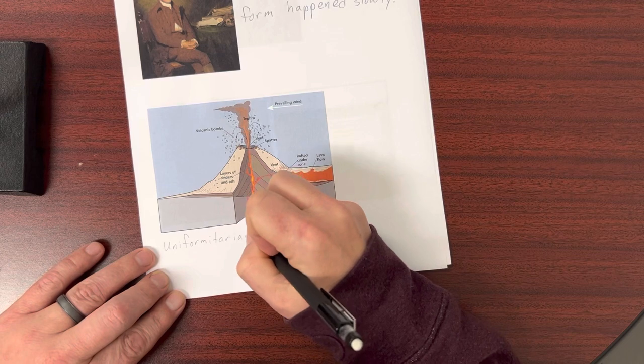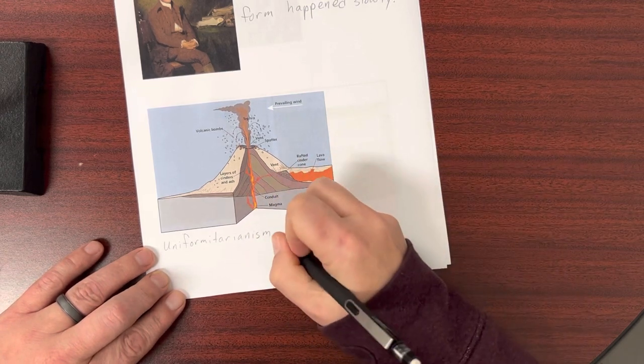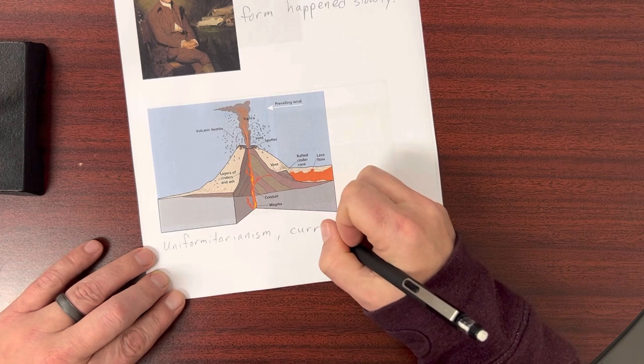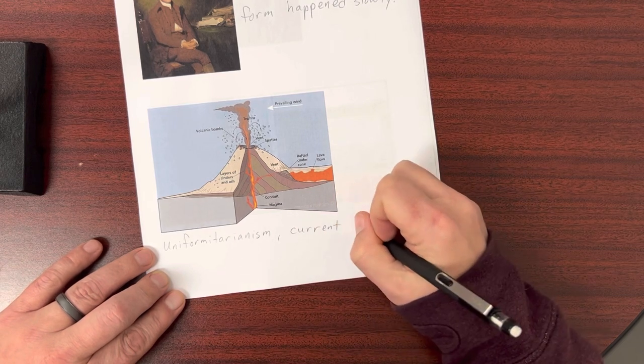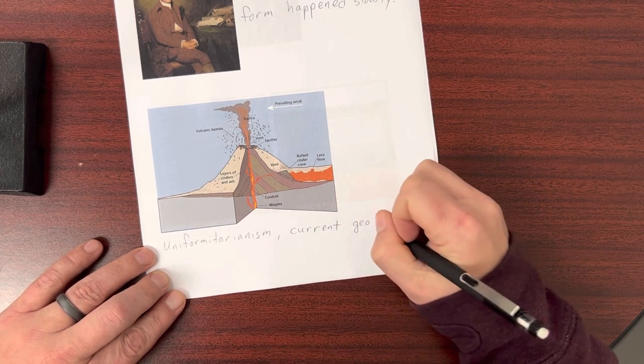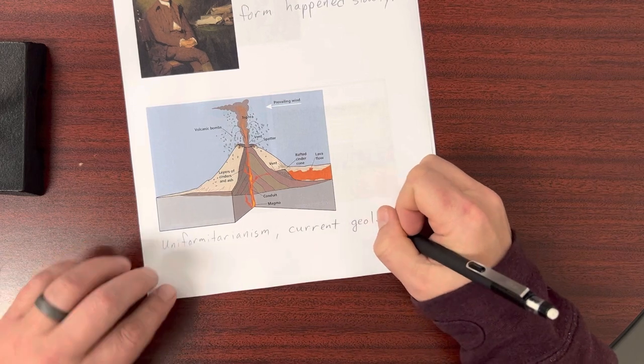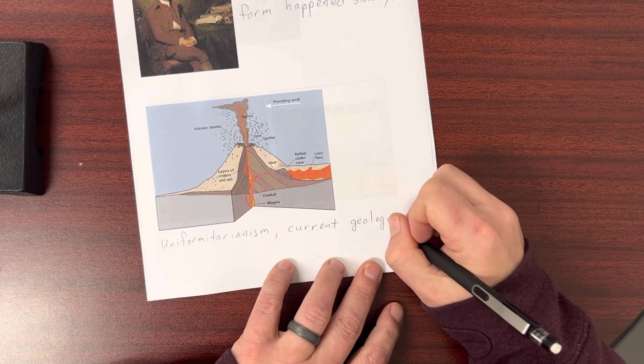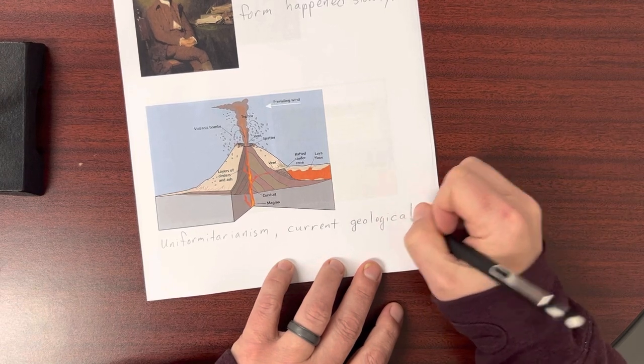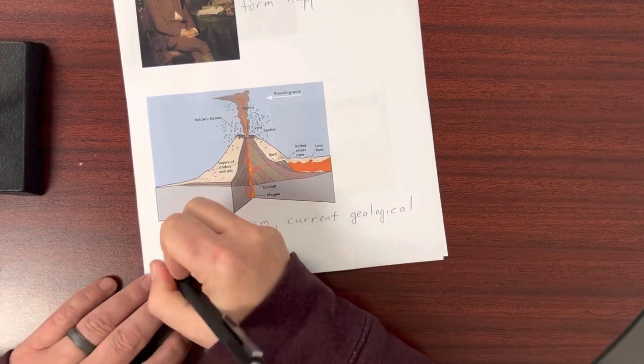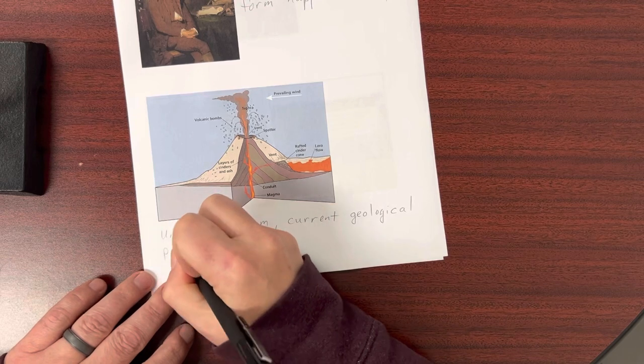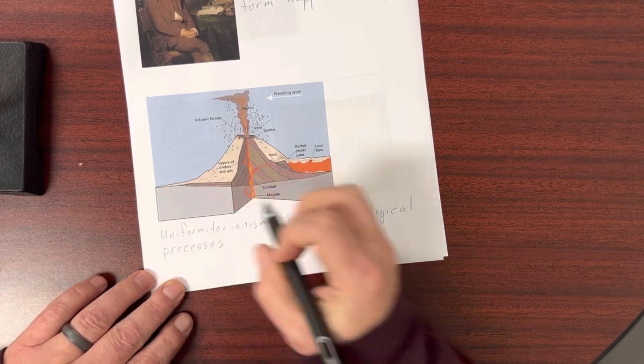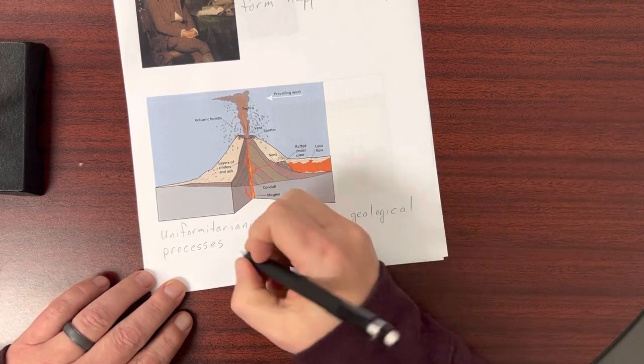And what that means is simply that the types of geologic processes that we see in current times—things like volcanoes, or earthquakes, or erosion, sedimentation—all these processes that we can see actively shaping the earth, they were most likely the same in earth's past.